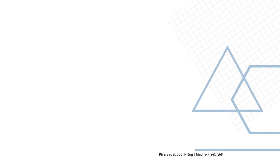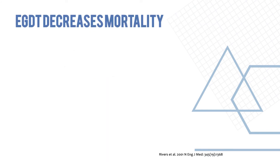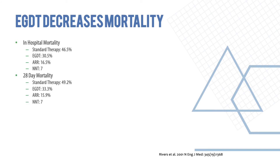It has been proven that early goal-directed therapy decreases mortality. In-hospital mortality is approximately 30% compared to 46% with standard therapy. 28-day mortality is 33% compared to 49%, and two-month mortality is 44% compared to 56% for standard therapy.